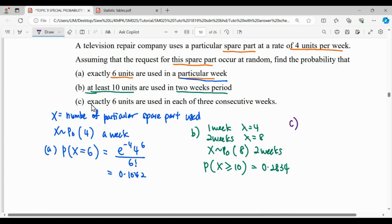For question C, they say find exactly 6 units are used in each of the 3 consecutive weeks. So for 3 weeks, the lambda will become 12. So 1 week is 4, for 3 weeks we times 3, so lambda becomes 12. So X is distributed Poisson with lambda 12. This is the time frame for 3 weeks.